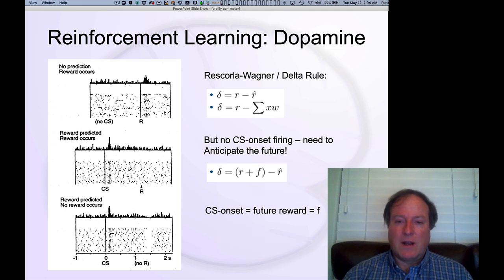It's the difference between what you predict and what actually happens. It's exactly the same as error-driven learning, and it just happens to be operating in the context of overall reward value. And this is exactly what the original Rescorla-Wagner learning rule was, that you have this delta or difference between the reward you actually get and the reward you expect.